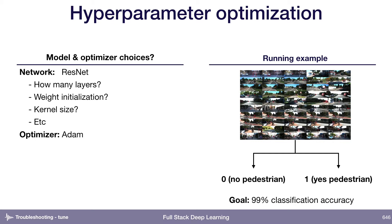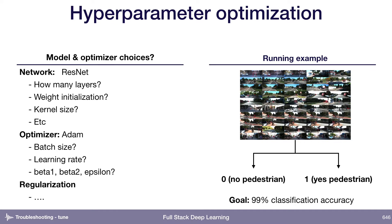For the optimizer, let's say we've decided to use Adam — but what batch size should we use? What learning rate? What Adam-specific parameters like beta1, beta2, and epsilon? Regularization, and so on. There's so many different things that we could possibly decide to tune. How do we pick which one we should do?